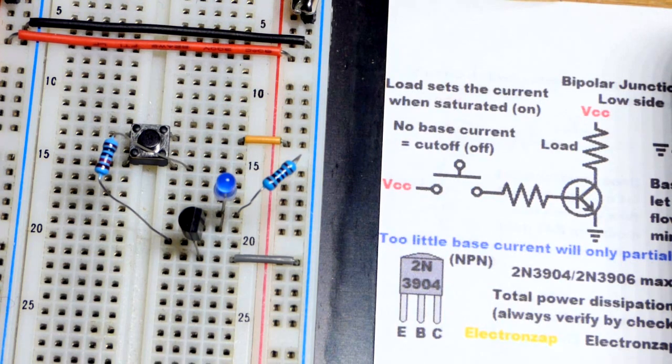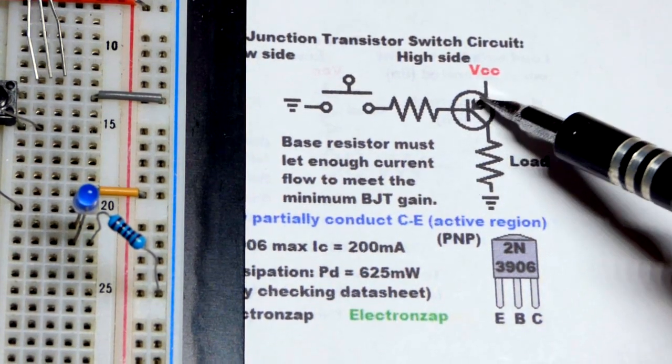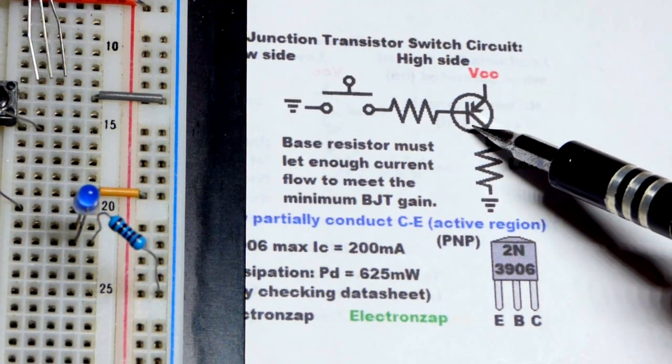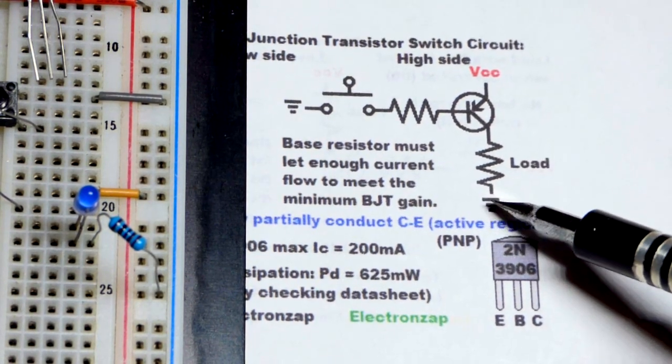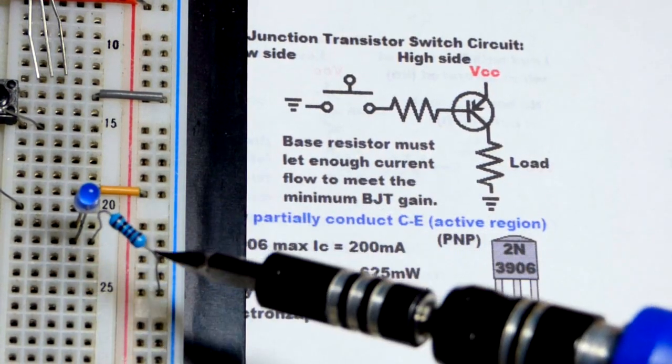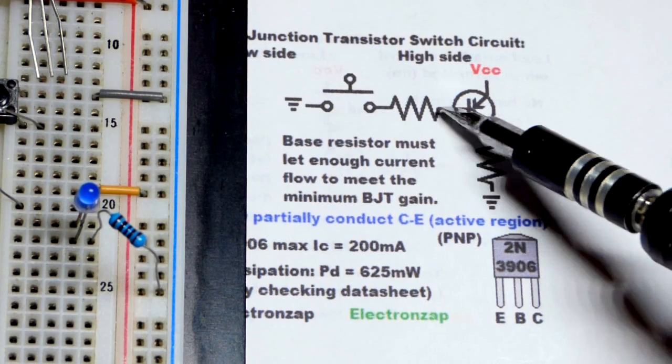That's the NPN bipolar junction transistor switch. The PNP bipolar junction transistor works the same way except polarities are opposite. We'll have the emitter to the positive supply now, and the collector is towards the negative supply ground, usually you call it. For the load again, we'll have an LED and a resistor. Make sure you put the LED in the right way.